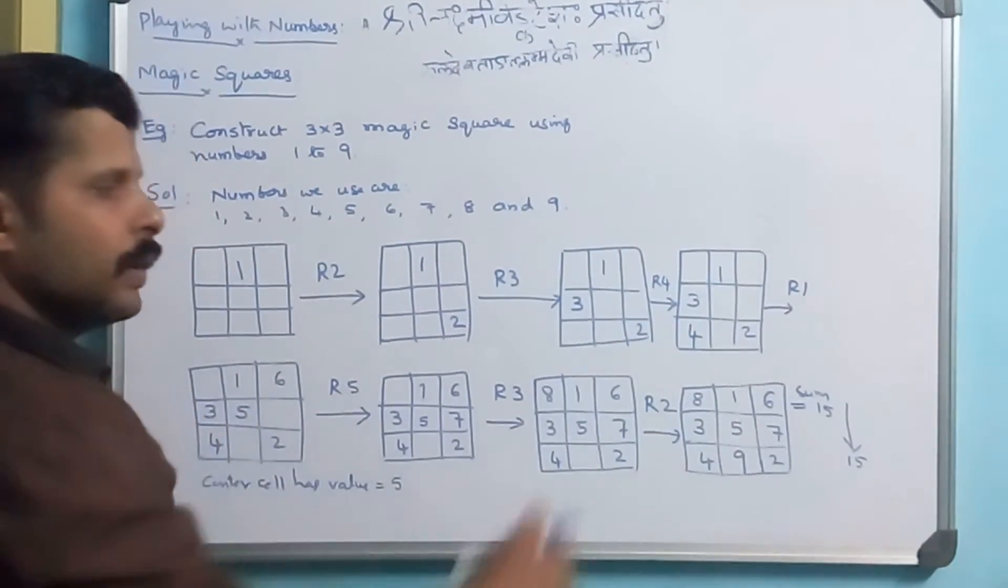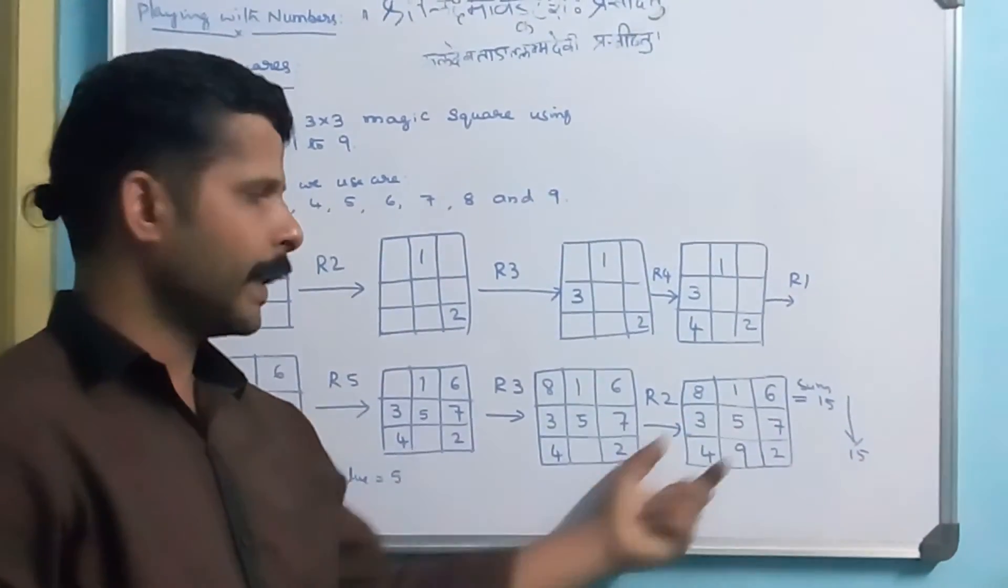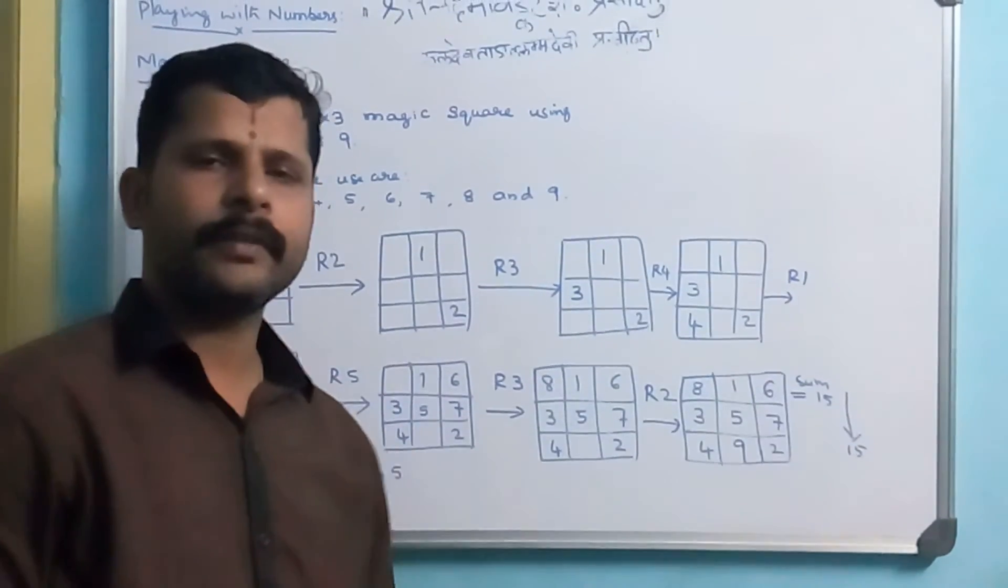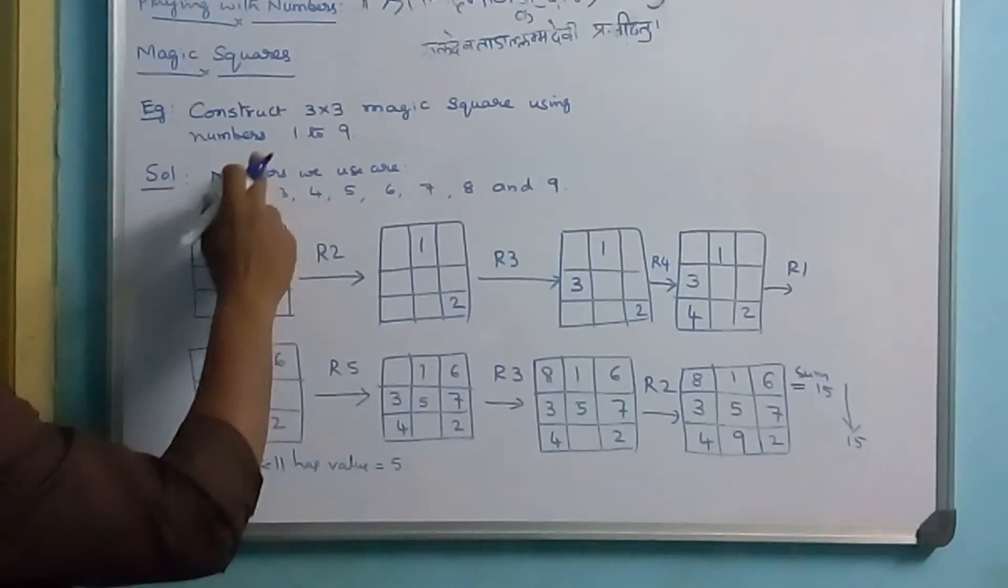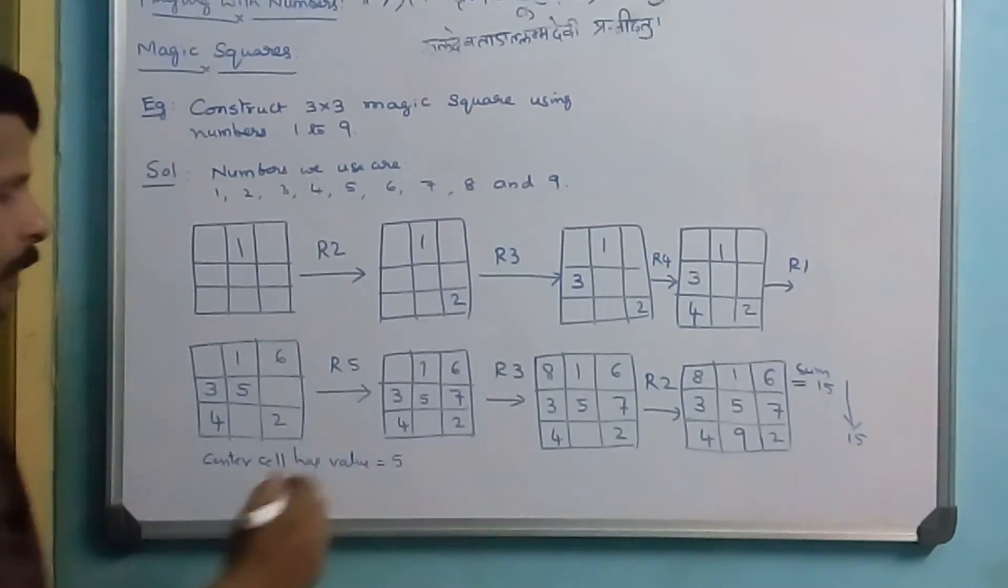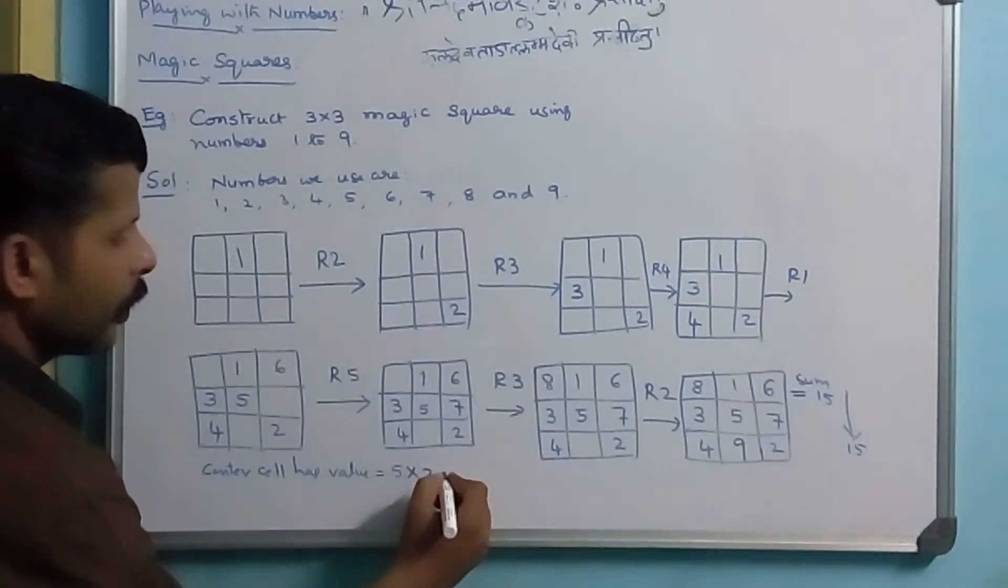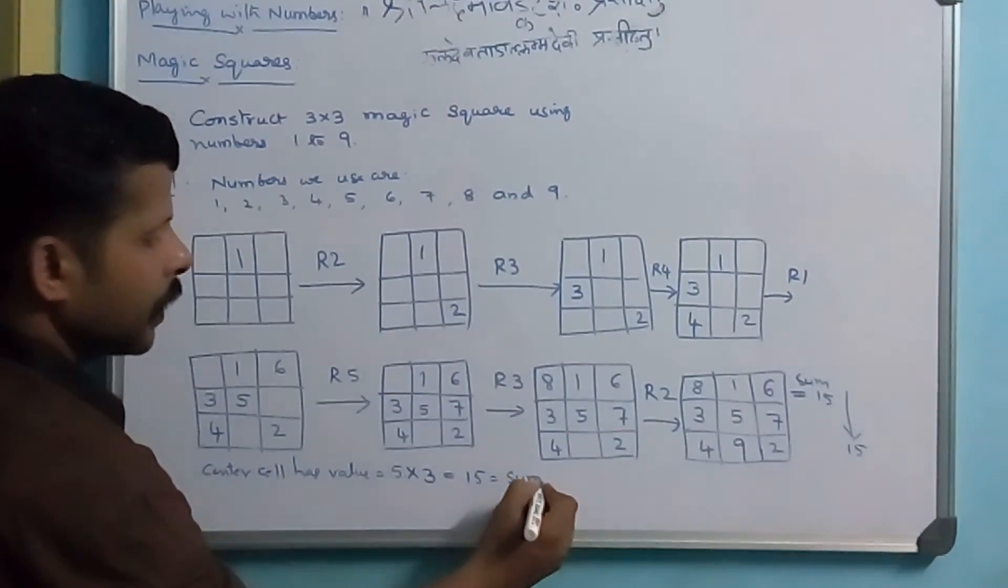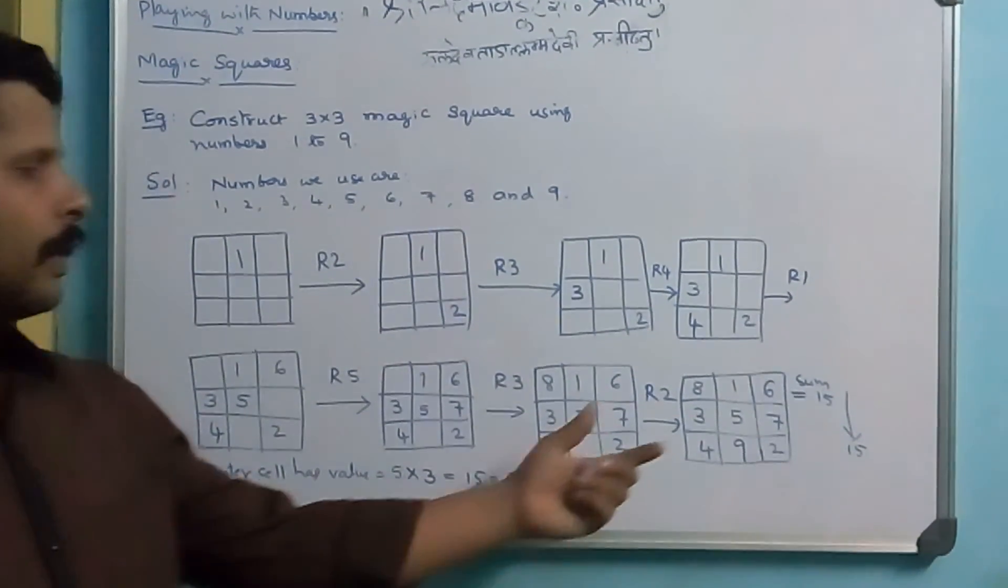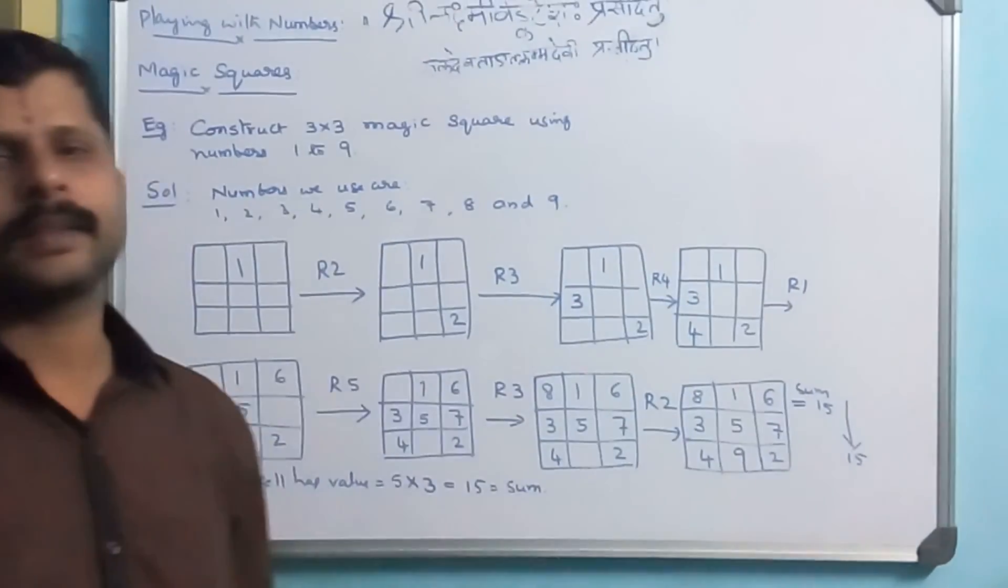So, in any way, if you add any column, any row, any diagonal, you get the sum 15. So, center cell has 5 and the square is 3 by 3. So, if you multiply the order of the cell, you get the sum. This is the relation of the magic square with the center cell.